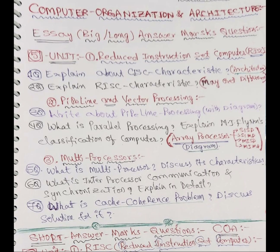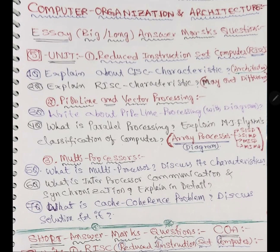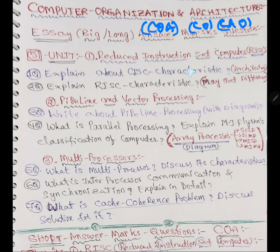Watch till the end — I will tell you some tips and tricks: even with important questions, how to write and prepare the exam. I will explain with a cursor. Our subject is Computer Organization and Architecture, COA. Some universities call it CO, some COA, some CAO — the title may differ but the syllabus will be the same. Here are long essay questions typed according to chapter sequence.